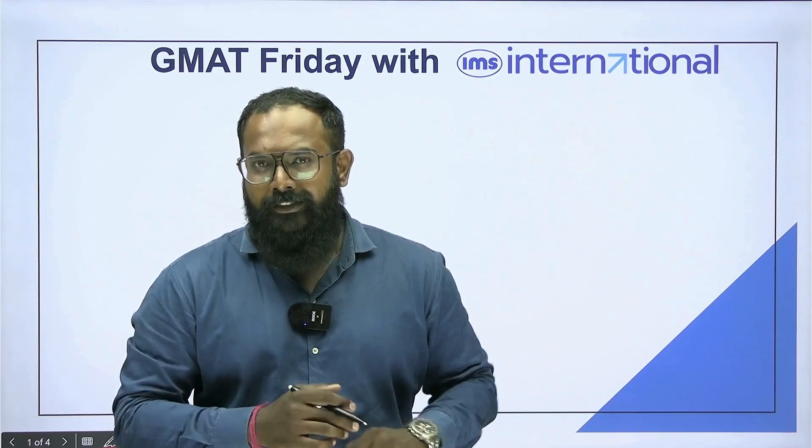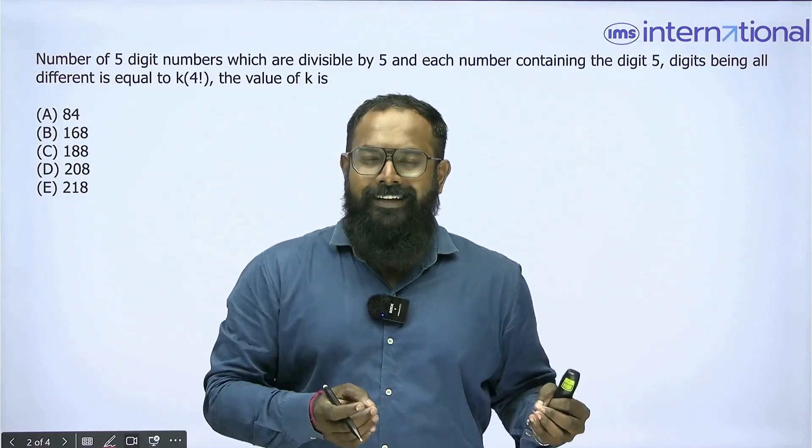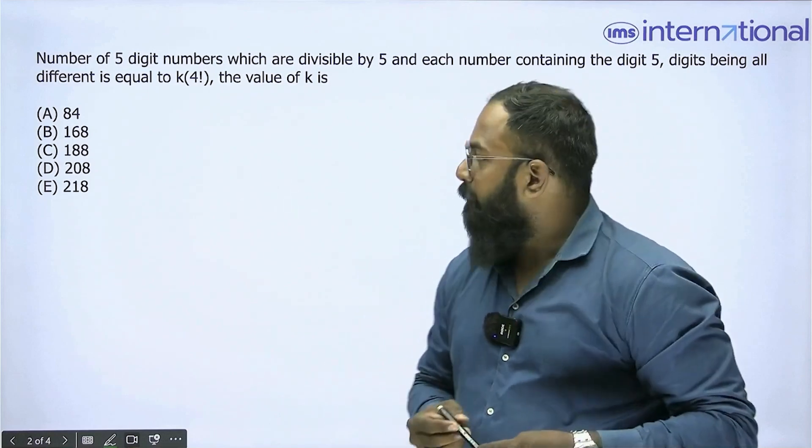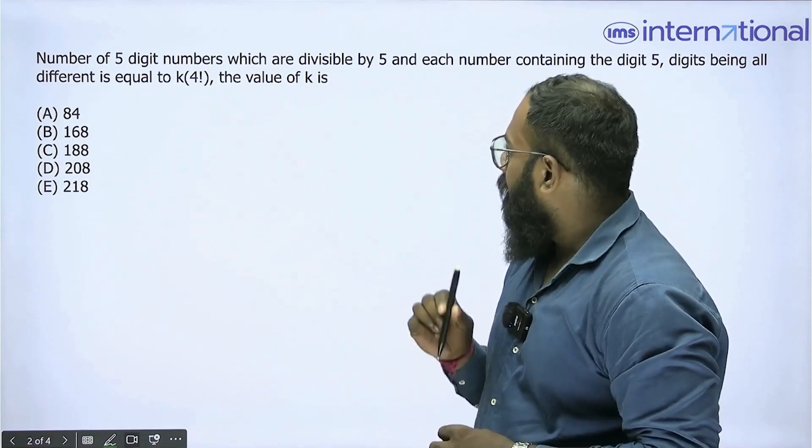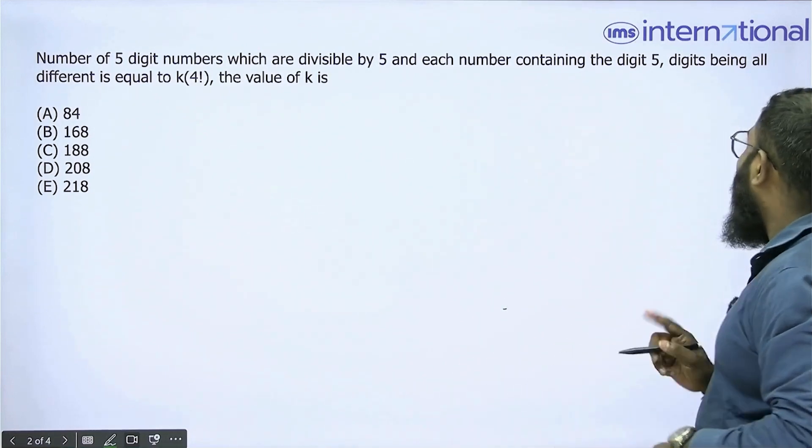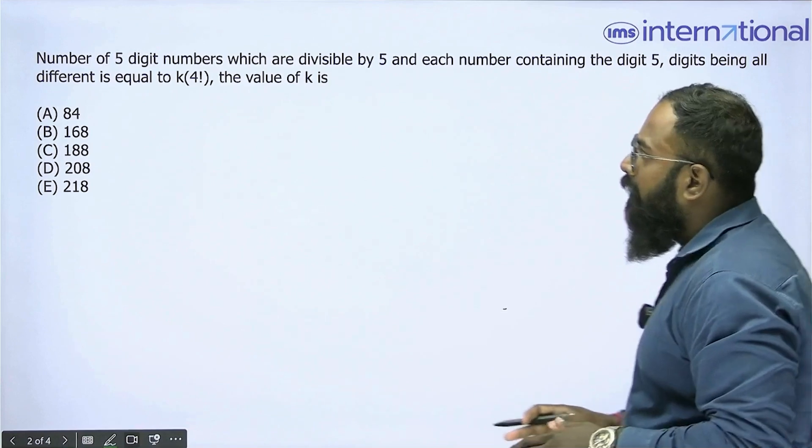Let's go ahead with today's question. This is the question in front of you - just pause the video, give it a try, then resume to see the solution. The question says: number of 5-digit numbers which are divisible by 5 and each number containing the digit 5, digits being all different, is equal to k times 4 factorial.